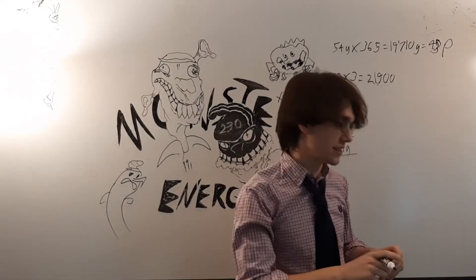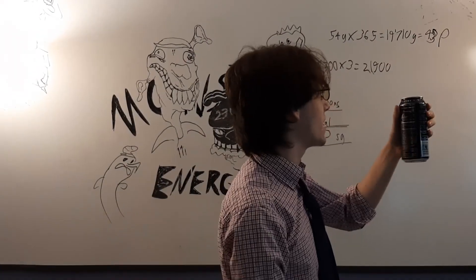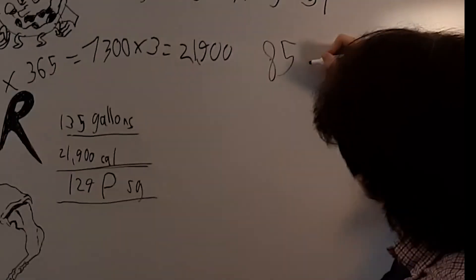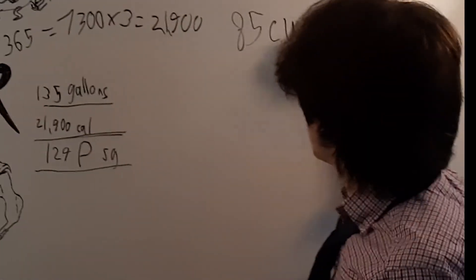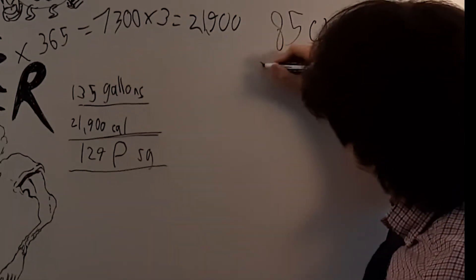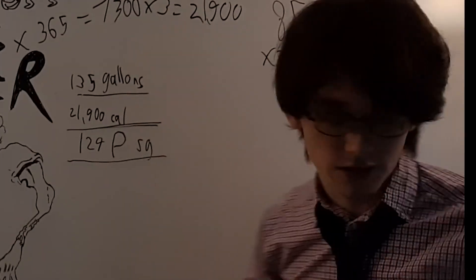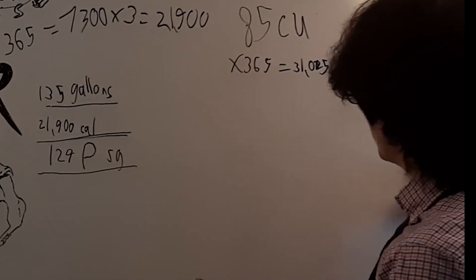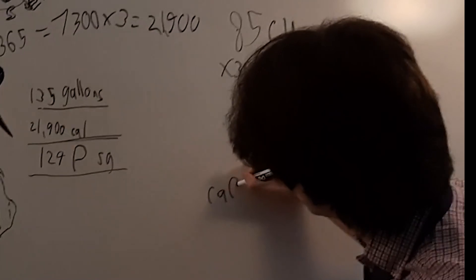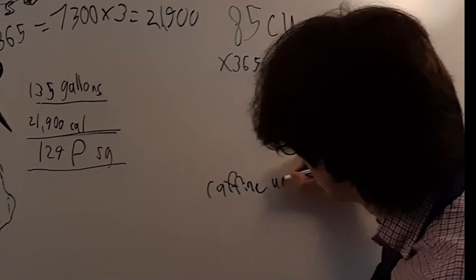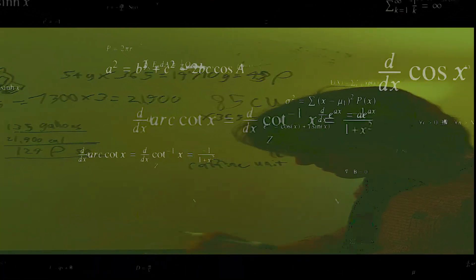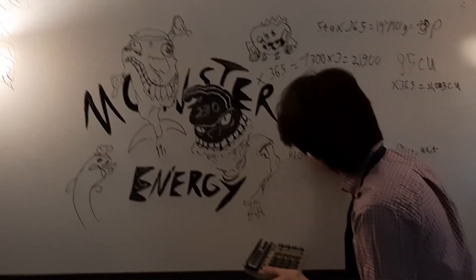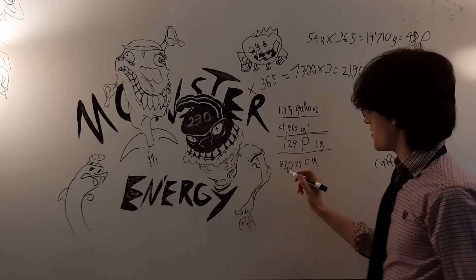How much caffeine? In case you guys noticed and you've watched my other videos, this is why I'm fucked up. We got 85 caffeine units here. Let's do some math. 85 times 365, that's 31,025 caffeine units. 31,000 times three equals 93,075 caffeine units here.